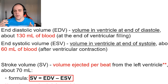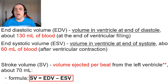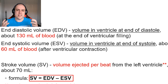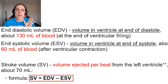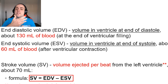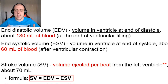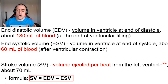The end diastolic volume and the end systolic volume combined give us our stroke volume, which is incredibly important. Stroke volume tells us the amount of blood leaving the heart per cycle. To calculate it, we take the end diastolic volume — how much blood is in the ventricle — and subtract the end systolic volume — how much was left over. That gives us the amount of blood that has left the ventricle per cycle.